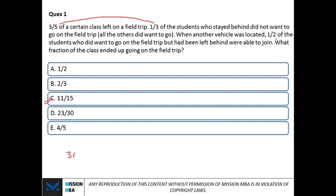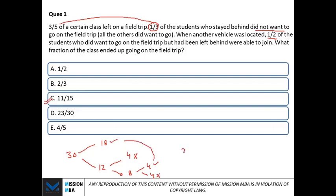Quick recap: total students thirty. Three-fifths went on the trip — eighteen. Left behind — twelve. One-third of twelve did not want to go — four. So eight wanted to go. Half of eight — four — were able to join. Total gone: twenty-two. Fraction: twenty-two over thirty = eleven by fifteen. Thirty seconds, done with a complex ratio question — that's how you tackle the GMAT.